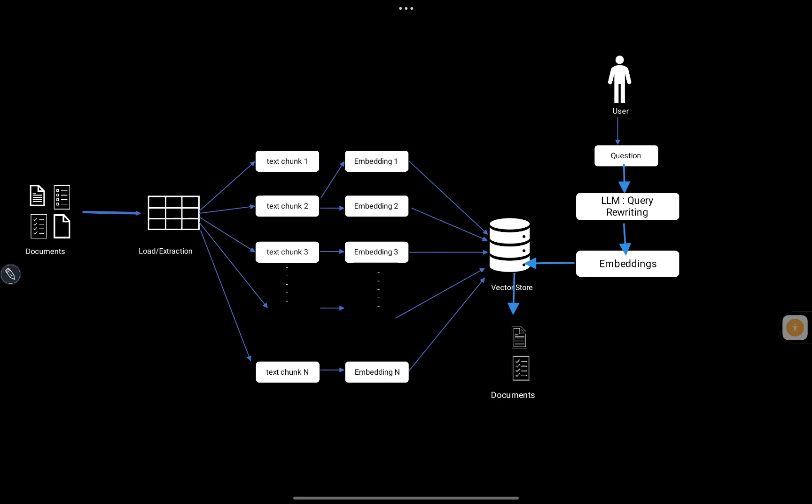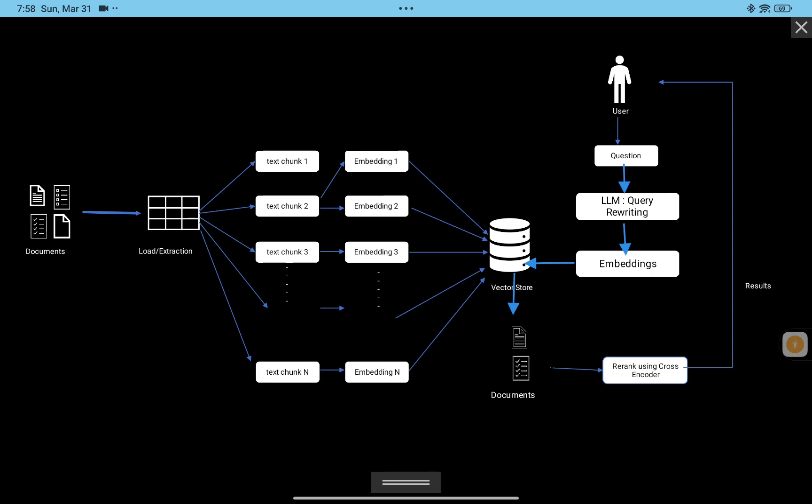We believe that by using augmented questions we will retrieve more documents than with the original question alone. Once the documents are retrieved, we take the original question along with those documents and send them to a cross-encoder. The cross-encoder gives us the semantic similarity between the question and the documents, which is used to rank the retrieved documents. The documents with higher rank are assumed to be more correct answers, and the result is sent back to the user.